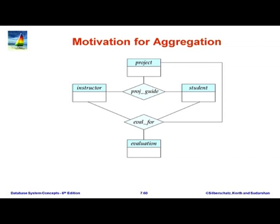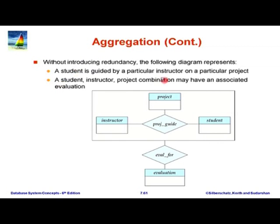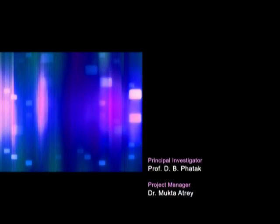I have skipped the material on cardinality constraints on non-binary relationships for lack of time. On aggregation: it is a concept in ER models that avoids certain kinds of redundancy. It is not to be confused with aggregation in UML, which has a completely different meaning. I do not have time to cover it here, but I want you to be aware it exists and there are slides and book material on it. Thank you.